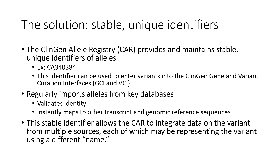Being able to refer to a single variant in a consistent, non-ambiguous manner is important for a variety of reasons. In the context of both clinical interpretation and ClinGen curation, this is important because it impacts your ability to find and integrate all available data on your variant. If you search for information on your variant using one naming convention, you could potentially miss information that may exist under a different name. The solution is to associate variants with stable, unique identifiers. The ClinGen Allele Registry, or CAR, provides such a service. It regularly imports alleles from key databases such as ClinVar, validates their identity, maps them to other transcripts and genomic reference sequences, and assigns a unique alphanumeric identifier such as CA340384 to link all of this information together.